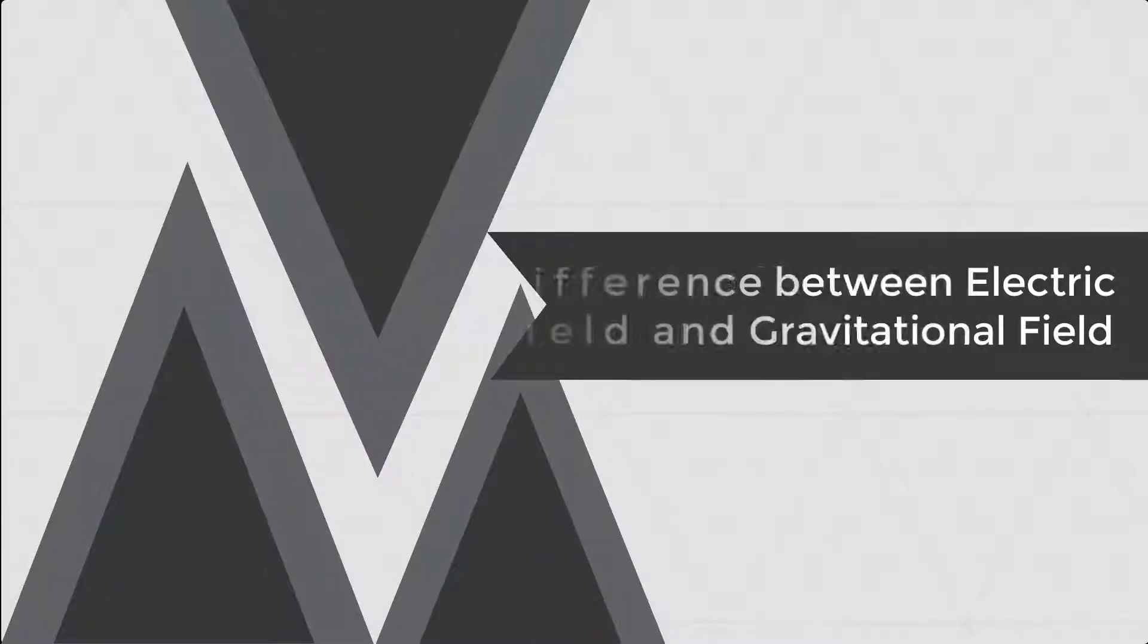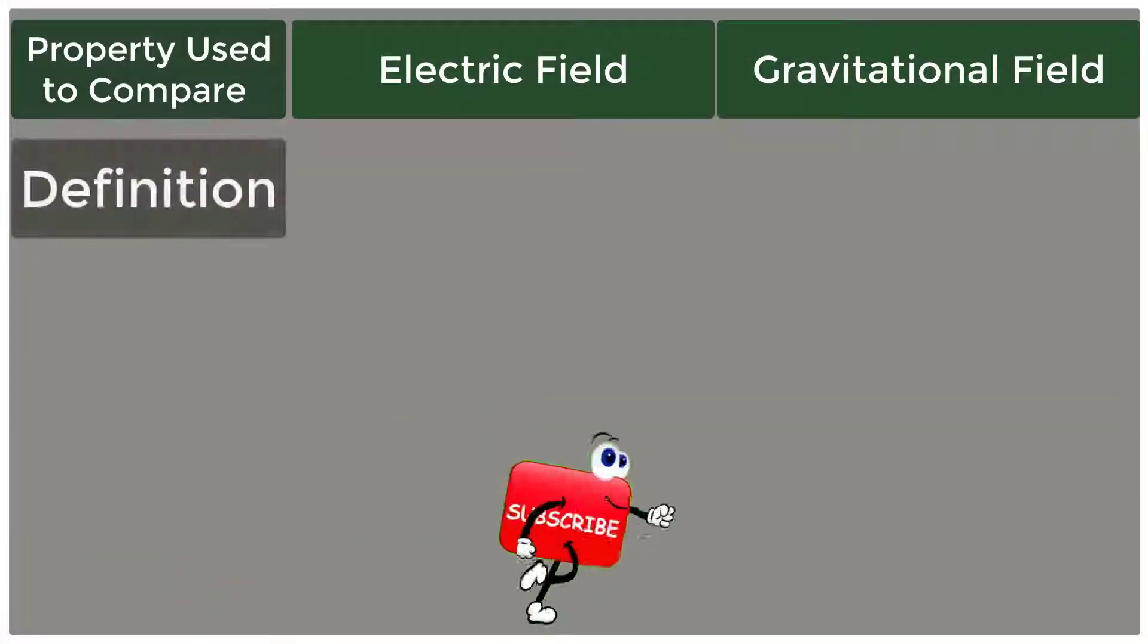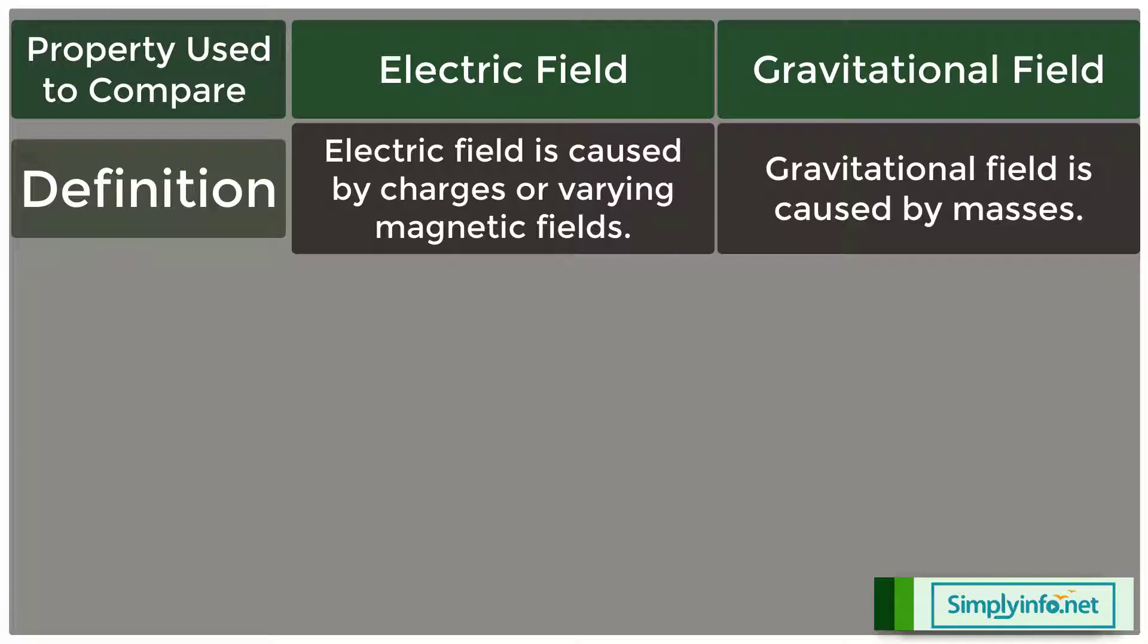Difference between Electric Field and Gravitational Field. Electric field is caused by charges or varying magnetic fields, whereas gravitational field is caused by masses.